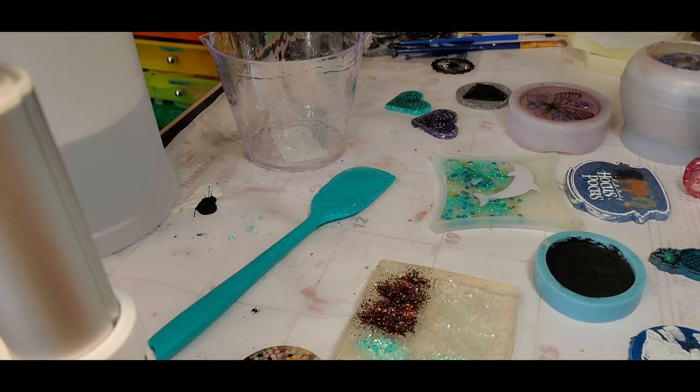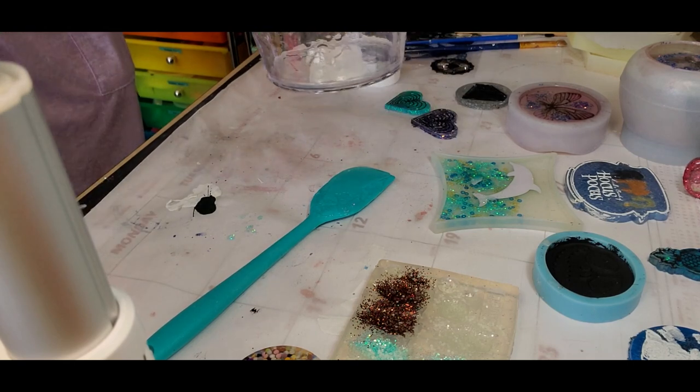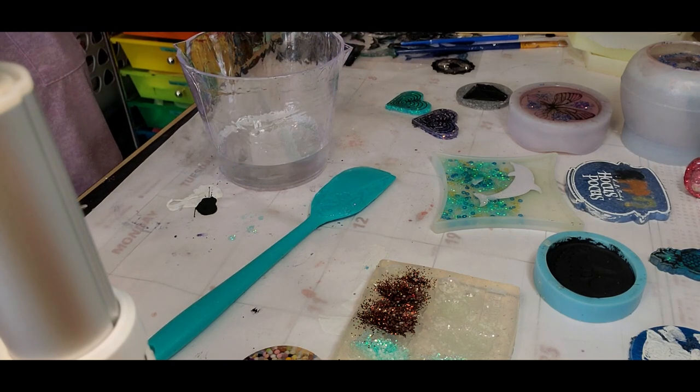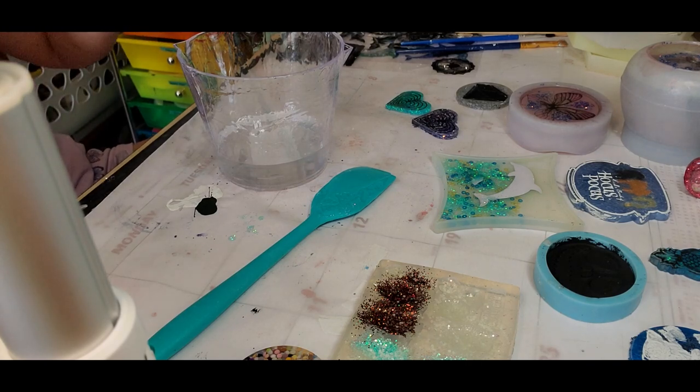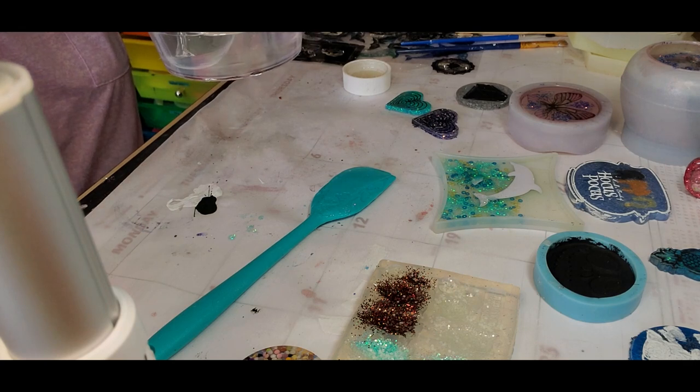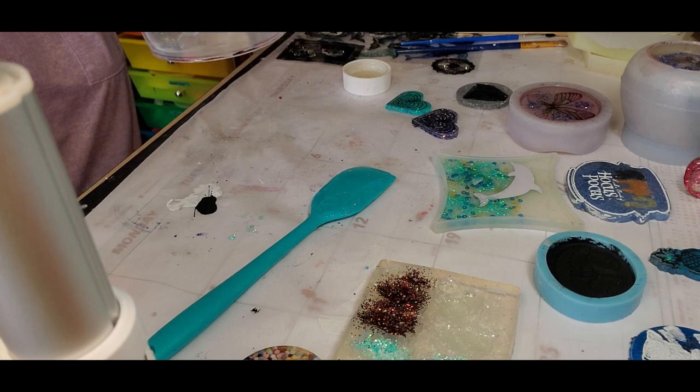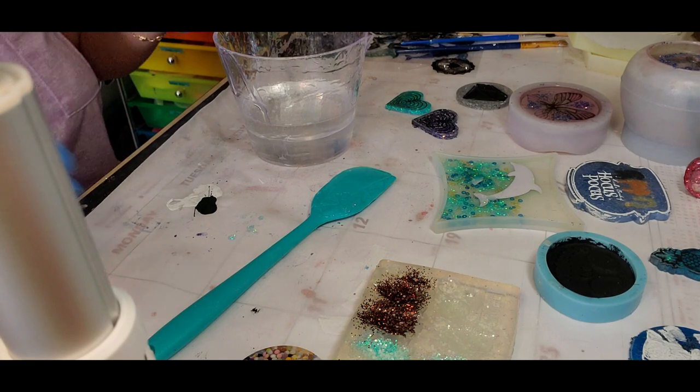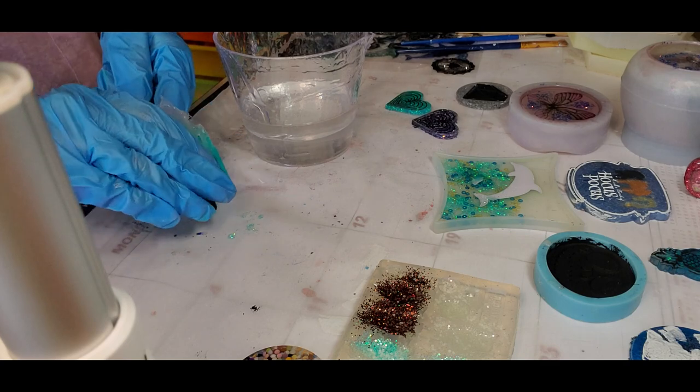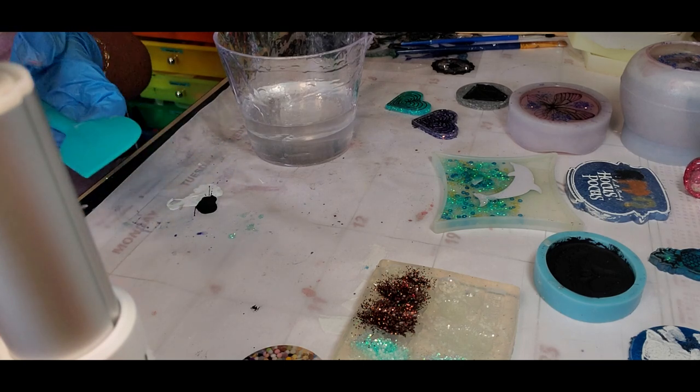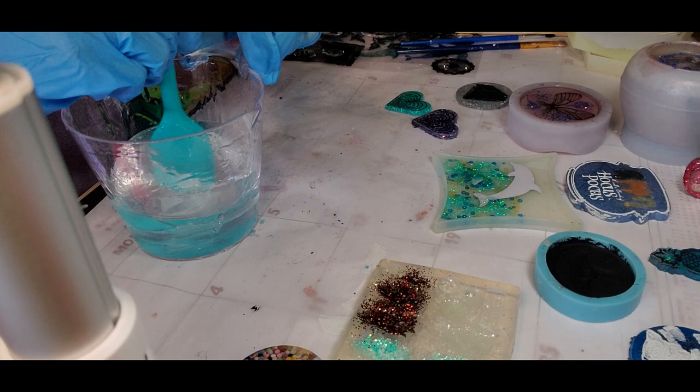So we're going to start off with measuring out equal parts of our resin. I bought this measuring cup at Dollar General. Dollar Tree also has some, but I like this one because it's nice and big and it gives me plenty of room to stir. I'm just holding the cup up in the light so I can see the markings because that's my only complaint about this measuring cup is that everything is clear.